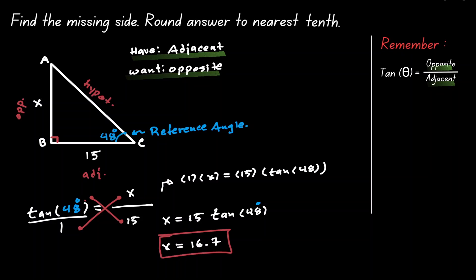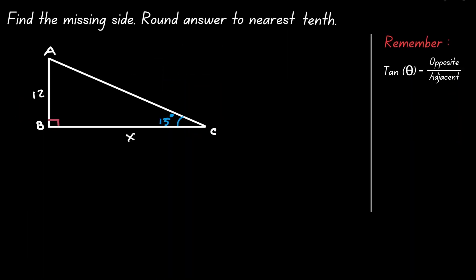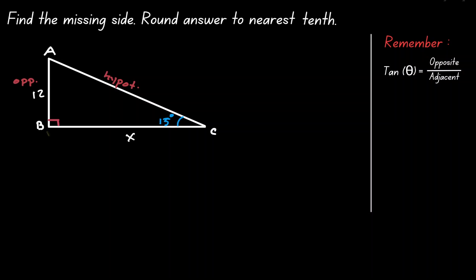Let's take a look at another example. Let's approach it as we did before — start by defining our reference angle with a measurement of 15 degrees, and label our triangle based on this reference angle. The side opposite to 90 degrees is the hypotenuse, the side opposite to our reference angle is the opposite side, and the side next to our reference angle is the adjacent side.